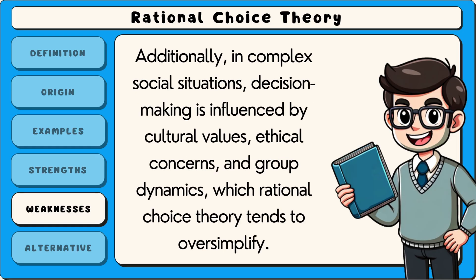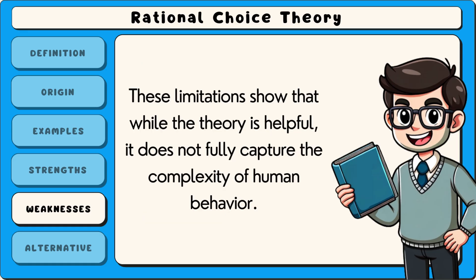Additionally, in complex social situations, decision-making is influenced by cultural values, ethical concerns and group dynamics, which rational choice theory tends to oversimplify. These limitations show that while the theory is helpful, it does not fully capture the complexity of human behaviour.